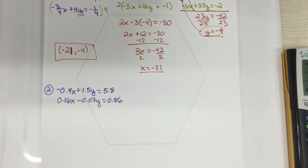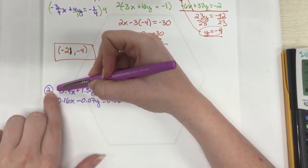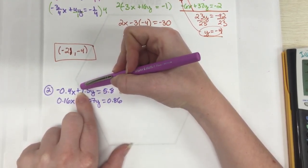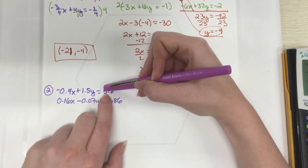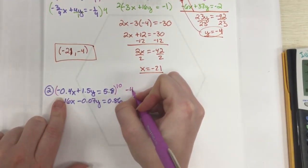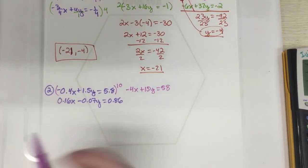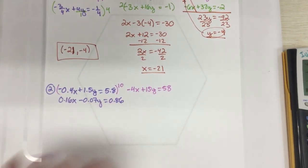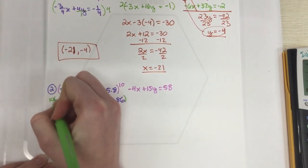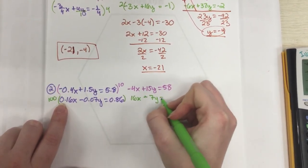Once again, though, I think most of us would rather deal with whole numbers than decimals or fractions. And so we want to get rid of the decimals. And the way we're going to do this is just notice how far they're going. So this one goes into a tenth. So if I multiply it by 10, it goes to a whole number, right? And this goes to a tenth. So if I multiply it by 10, it goes to a whole number. And this is to a tenth. So if I multiply it by 10, it goes to a whole number. So I'm going to multiply this entire top equation by 10. And so what I get is negative 4x plus 15y equals 58. All right. And if I look at the bottom one, it goes to a hundredth, a hundredth, and a hundredth. So instead of multiplying by 10, this time I'm going to multiply by 100. And so I'm going to get 16x minus 7y equals 86.